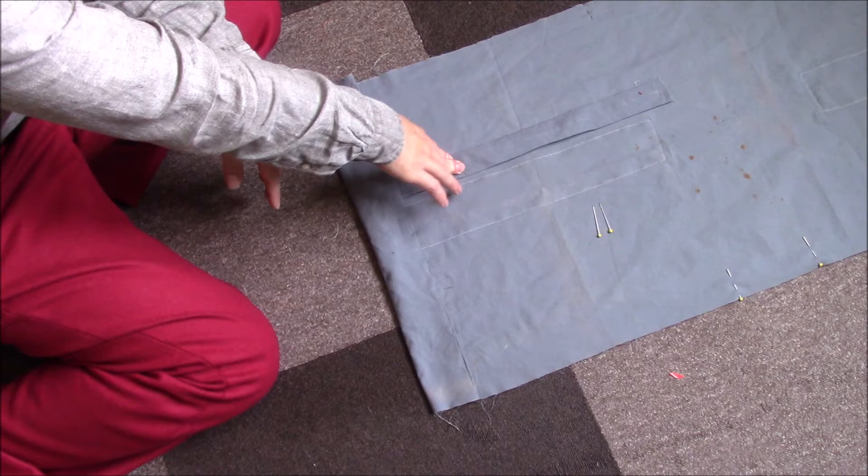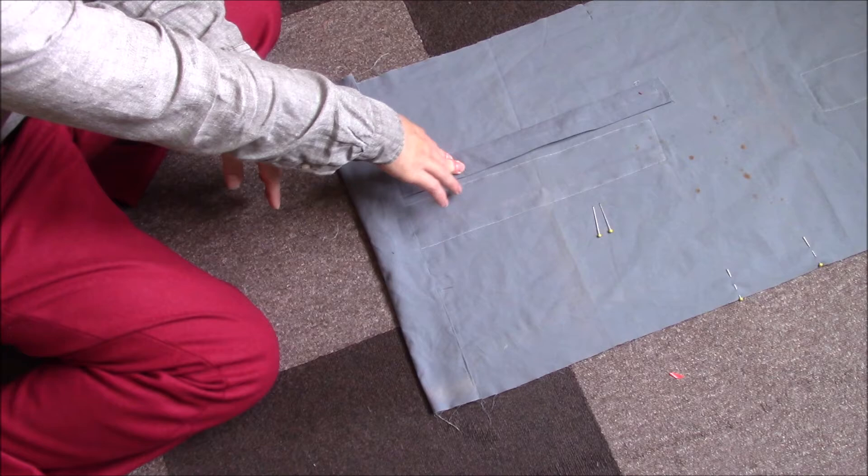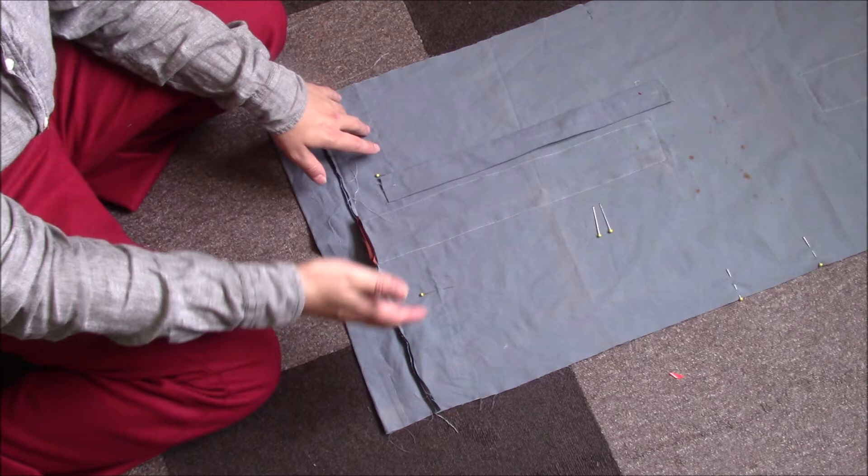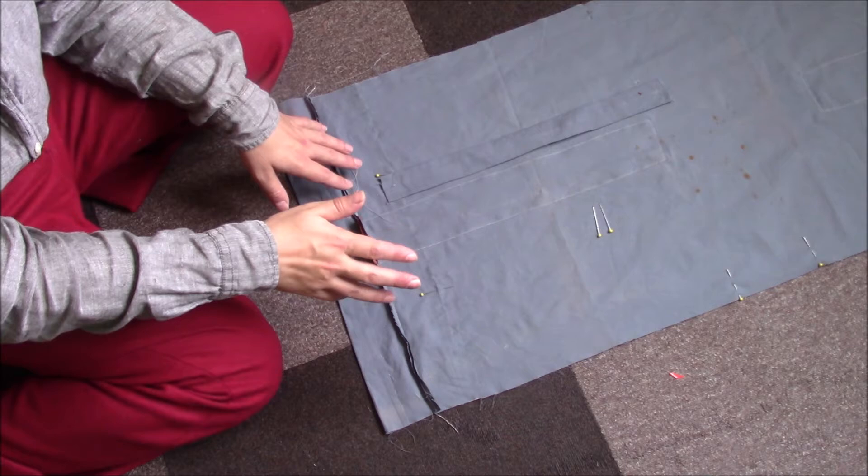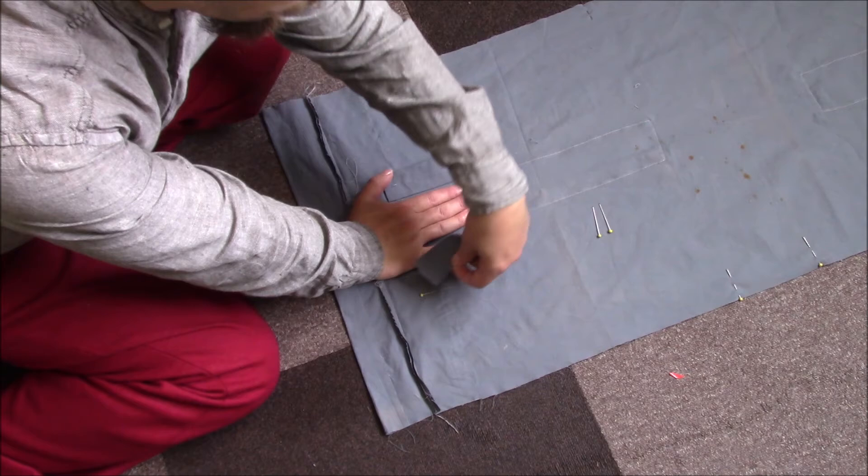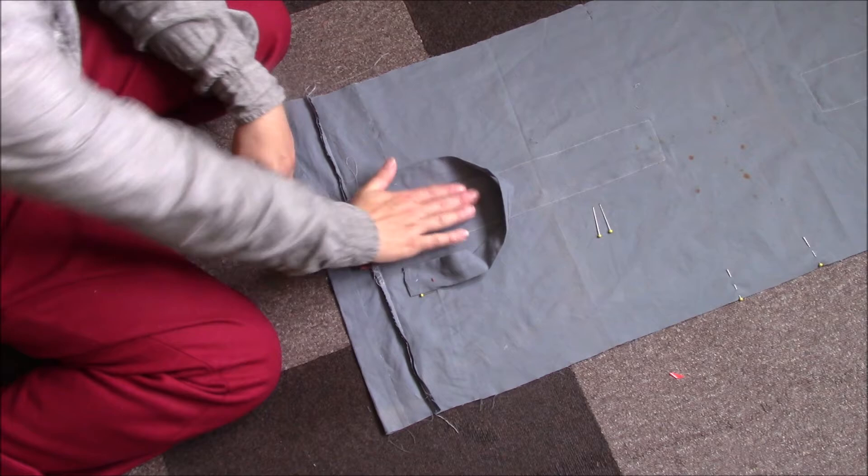When you do the handles, you can actually set them to whatever size you personally want. With this bag, if you really wanted to, you could actually make the handles much longer, set them further apart, and make this into a shoulder bag very easily. For this one, this is just a carrier bag, so it's a fairly short handle. And the way I get a rough idea of how big the handle is, is I put my hand down on the bag, and then I take the handle itself, and I put that around my hand.